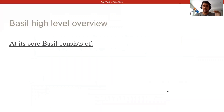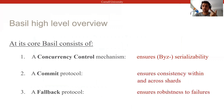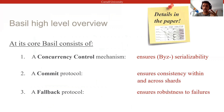At a high level, Basel is made up of three core components: first, a concurrency control mechanism that allows for optimistic parallelism but ensures serializability; second, a commit protocol that is integrated with the concurrency control protocol to avoid redundant coordination and efficiently ensure consistency across shard replicas and across shards.